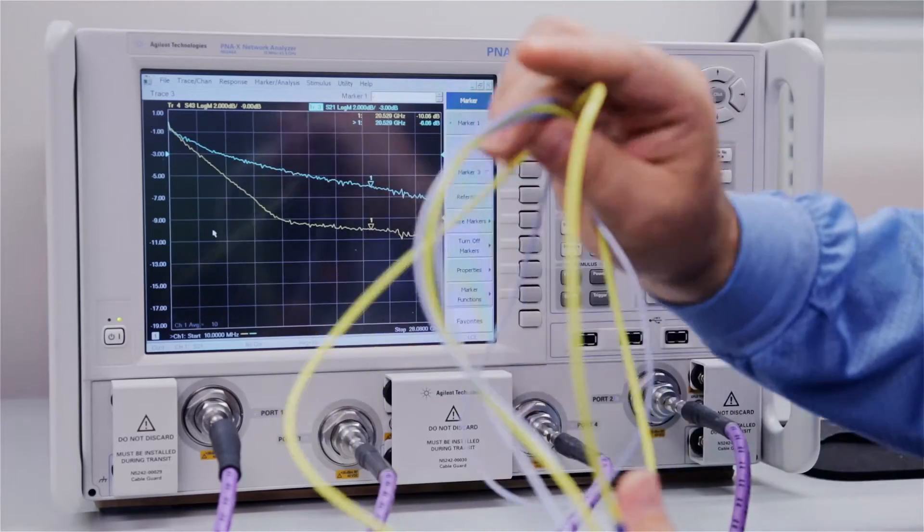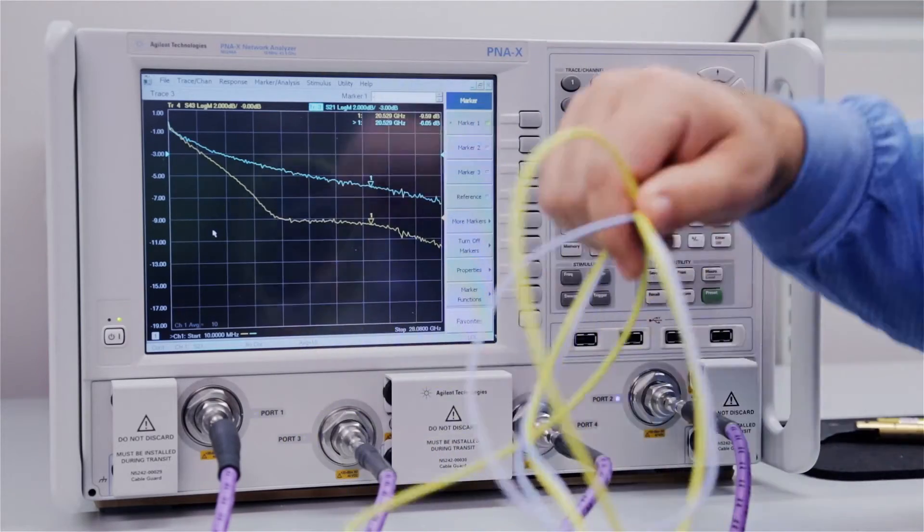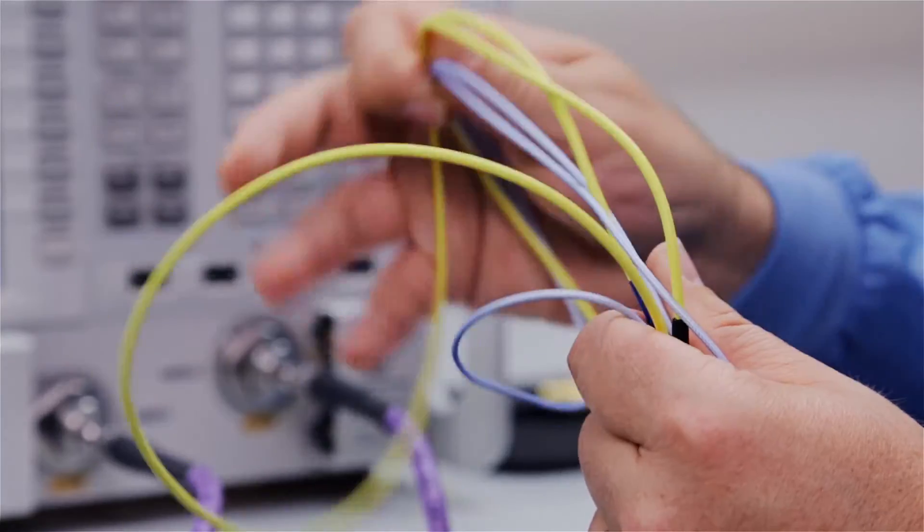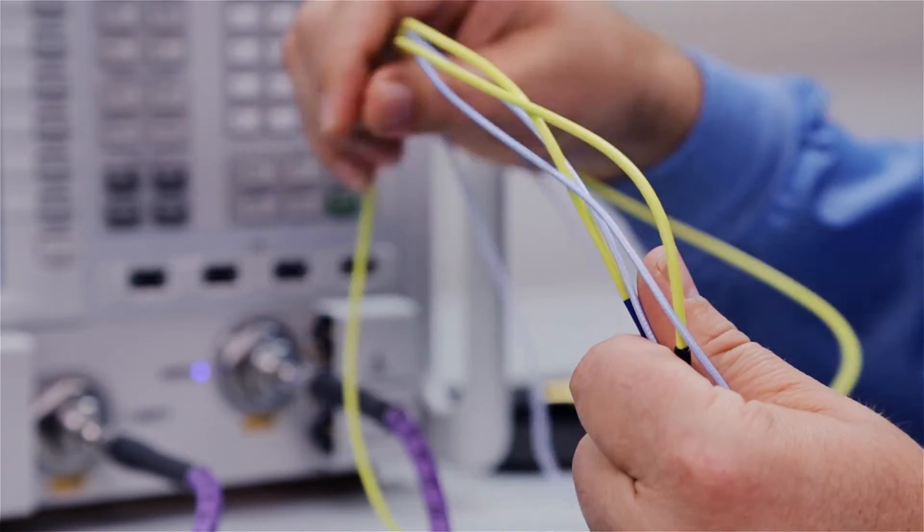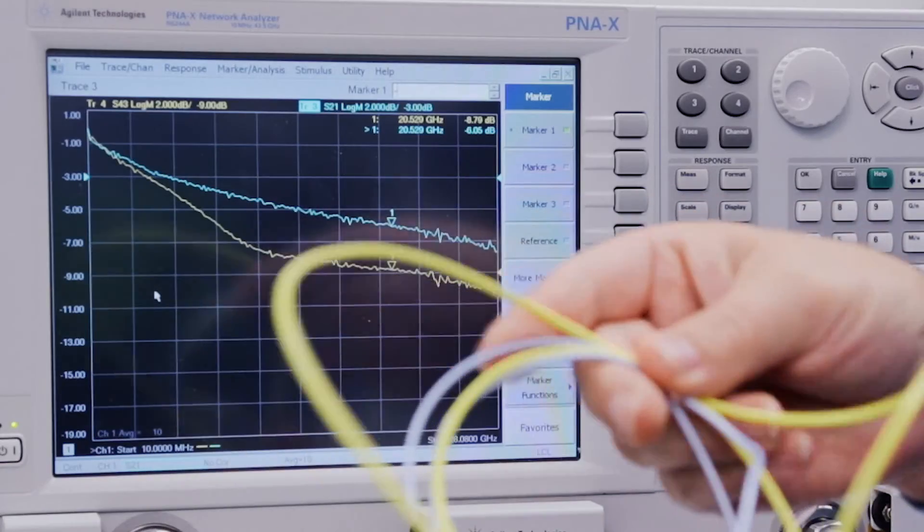Any flexure we put into these, that yellow line has no stability whatsoever to it, but you'll see the blue cable going through the same motions is rock solid. It doesn't change.